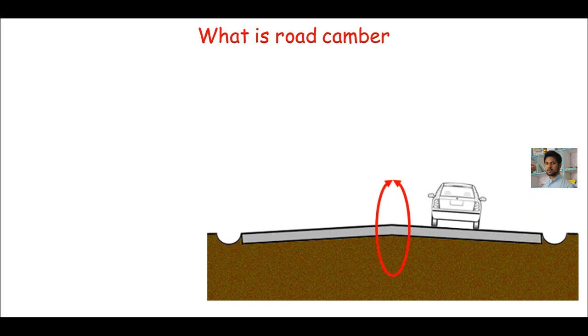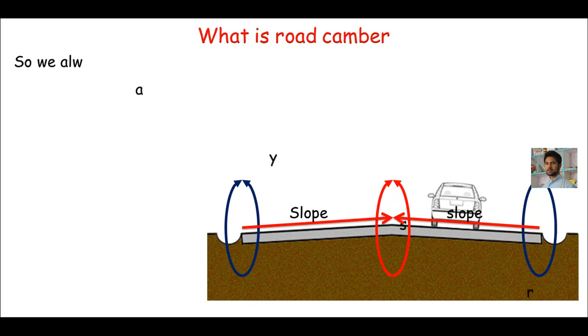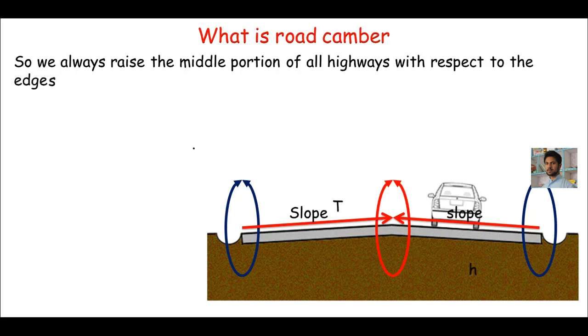By raising this middle portion of highway with respect to its edges, we can get some slopes in transverse direction. Typically in highway design, we always raise the middle portion of highway with respect to its edges. This cross slope in transverse direction is known as camber.